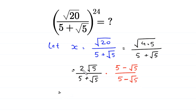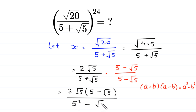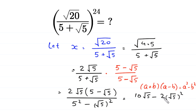Next, we have 2 times root 5, multiplied by the expression 5 minus root 5, divided by: using the algebraic identity A plus B times A minus B equals A squared minus B squared, this 5 plus root 5 times 5 minus root 5 becomes 5 squared minus root 5 squared. This gives us 2 times root 5 times 5 minus root 5 squared in the numerator.